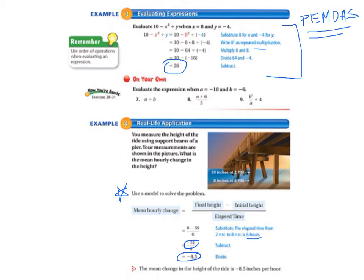So, it says at the bottom of your page, the mean change in the height of the tide is negative 8.5 inches per hour.